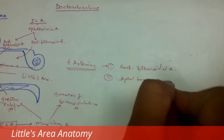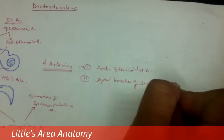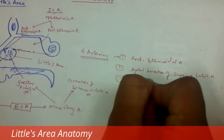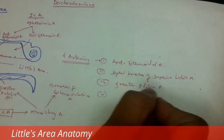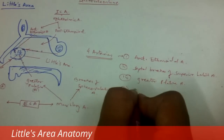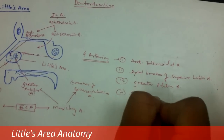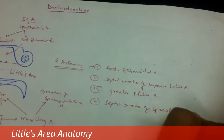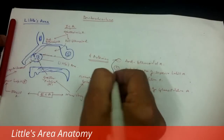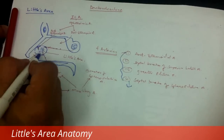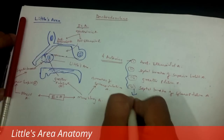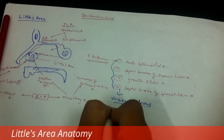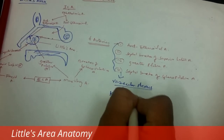The second is the septal branch of the superior labial artery, which is a branch of the facial artery. The third is the greater palatine artery, which is a branch of the maxillary artery. The fourth is the septal branch of the sphenopalatine artery. These four arteries make an anastomosis with each other and form a vascular plexus, which is also called Kiesselbach's plexus.